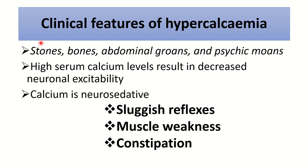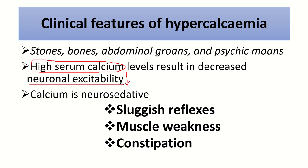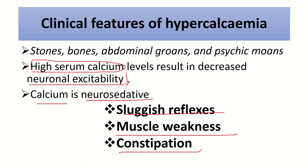Here are the clinical features of hypercalcemia: stones (kidney stones), bones (bone pain), abdominal groans, and psychic moans. High serum calcium levels result in decreased neural excitability — this is an important point. When calcium levels increase, it causes decreased neuronal excitability. That means calcium is neuro-sedative: high calcium causes depression of the nervous system, sluggish reflexes, muscle weakness, and constipation.